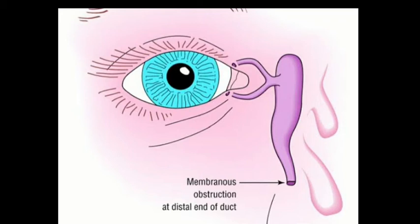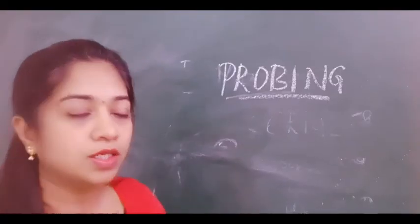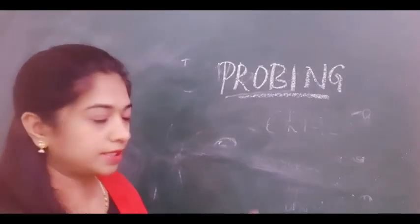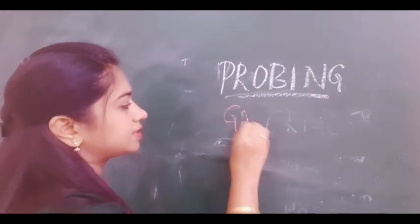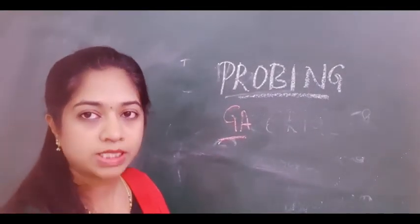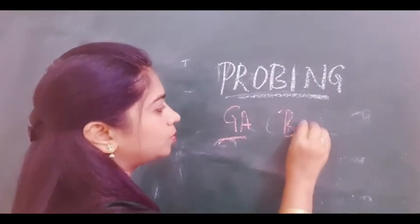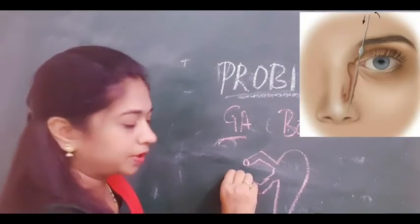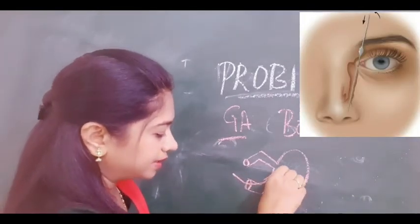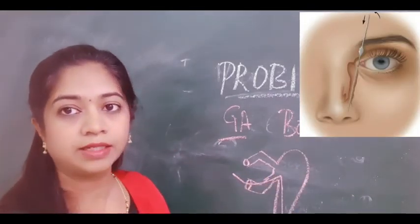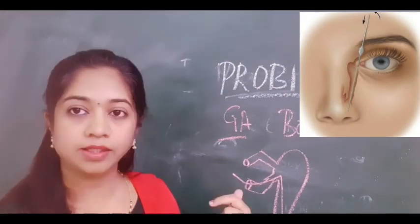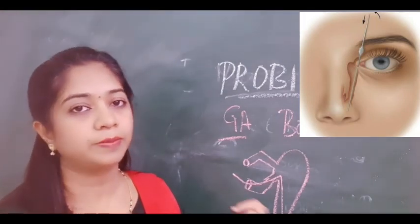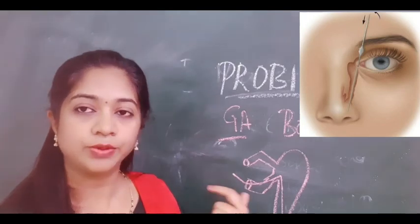When syringing is not working and the child is not relieved of watering symptoms, the next step is probing. Probing is done under general anesthesia using Bowman's probes. The probe is passed from the inferior punctum and directed downwards towards the nasolacrimal duct, mechanically opening the obstruction. If probing fails at the first setting, it can be repeated after 3 to 4 weeks.